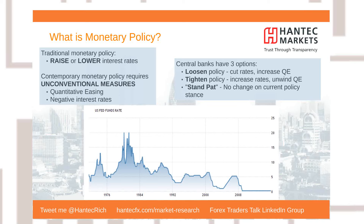Ever since the crash of 2008, there's always been a problem with pensioners in the UK whereby they haven't been getting any return on their money and they've always wanted interest rates to go up so they get more return on their savings. That's why there are always two sides to the argument on raising and cutting interest rates. At the moment, interest rates are sitting at ultra-low levels and central banks have had to come up with something different to loosen monetary policy further — hence quantitative easing came into practice.